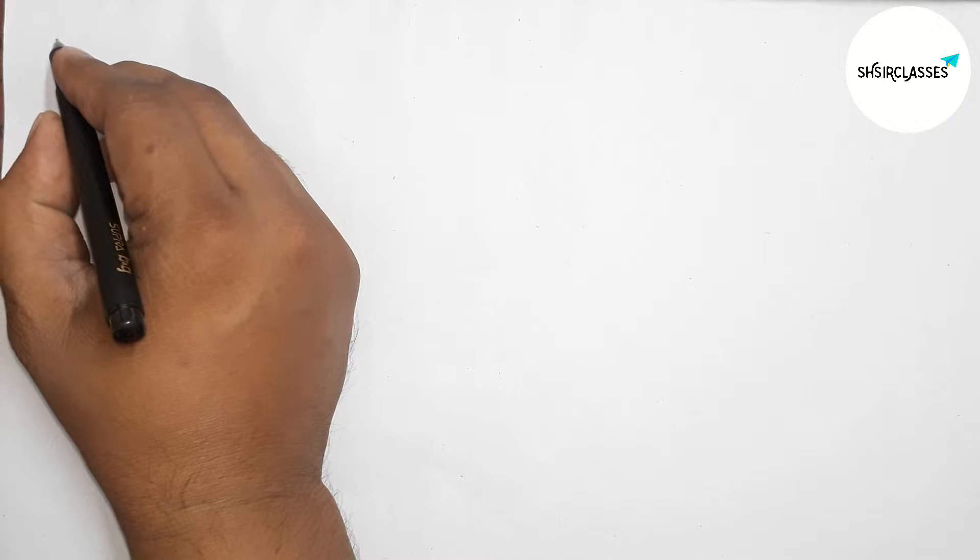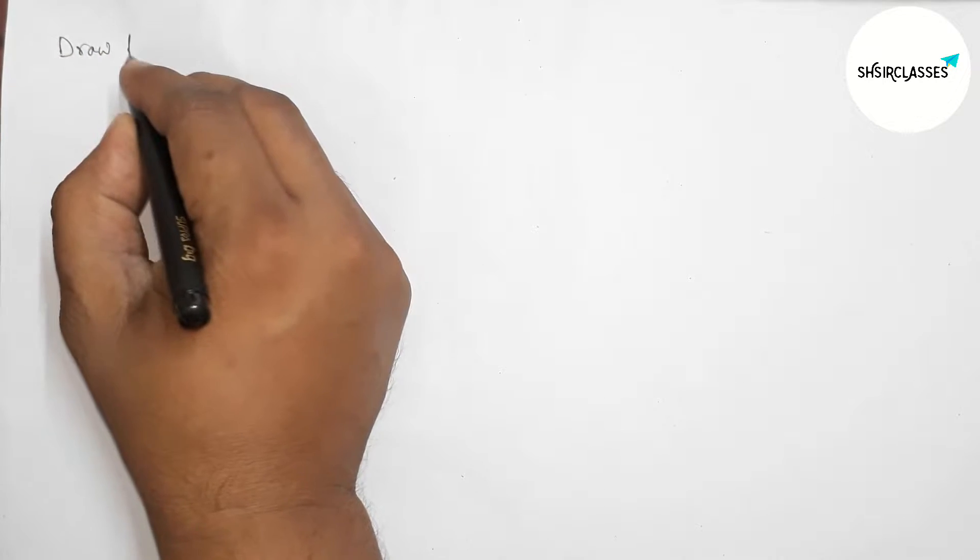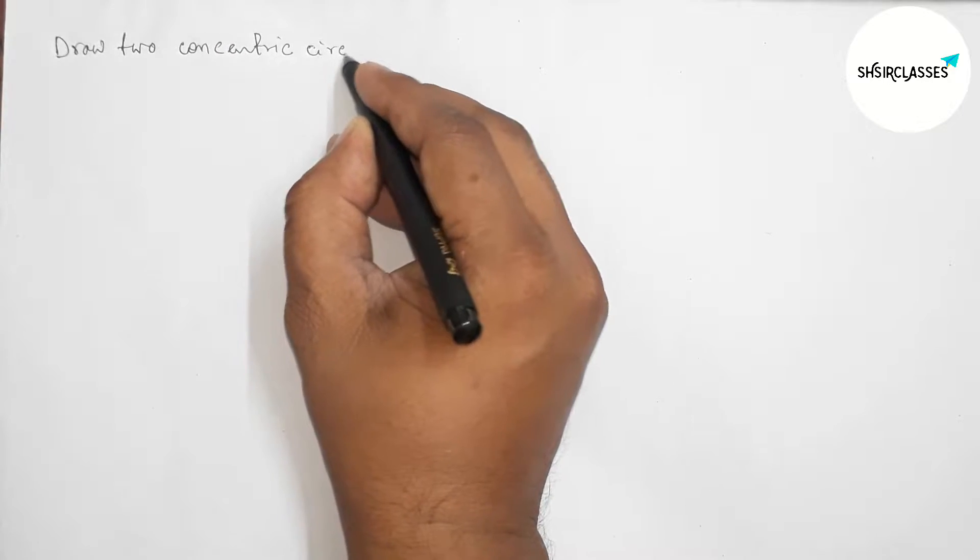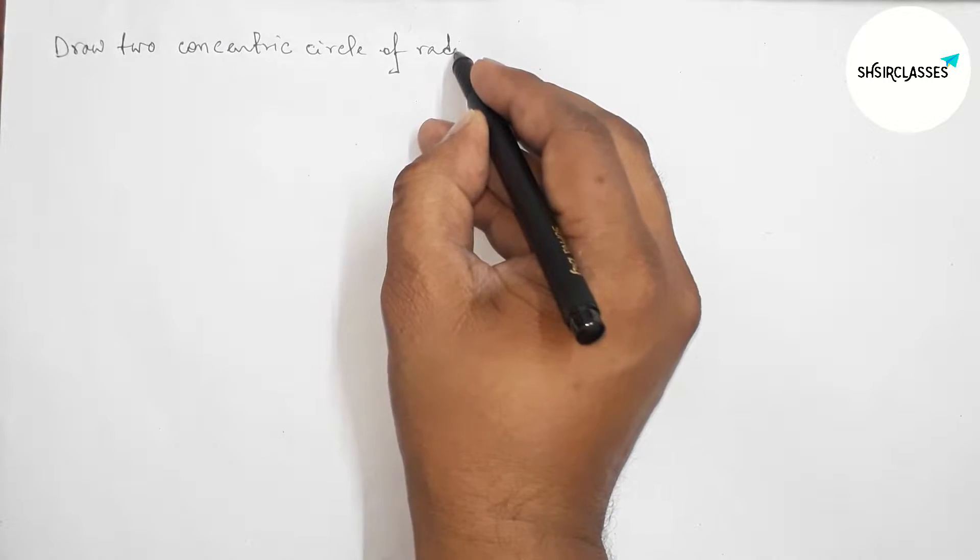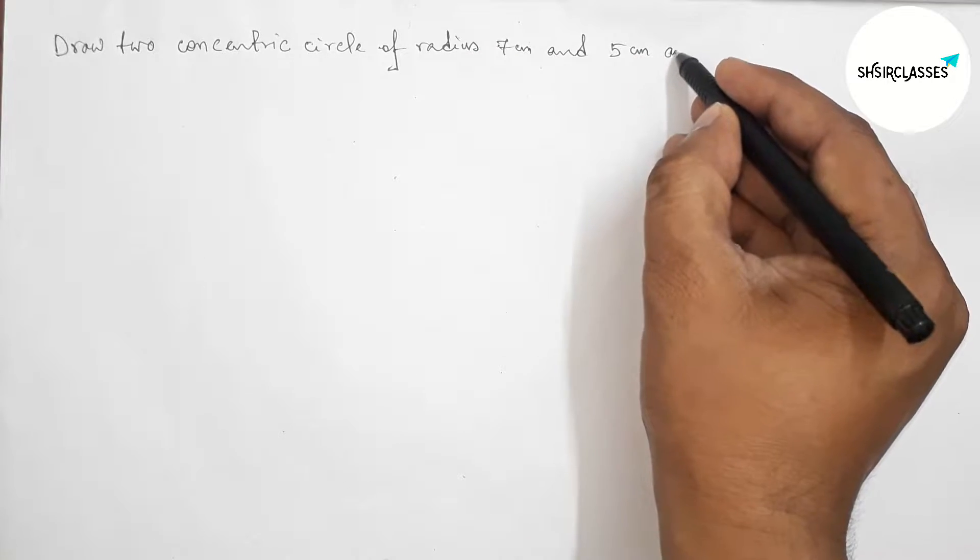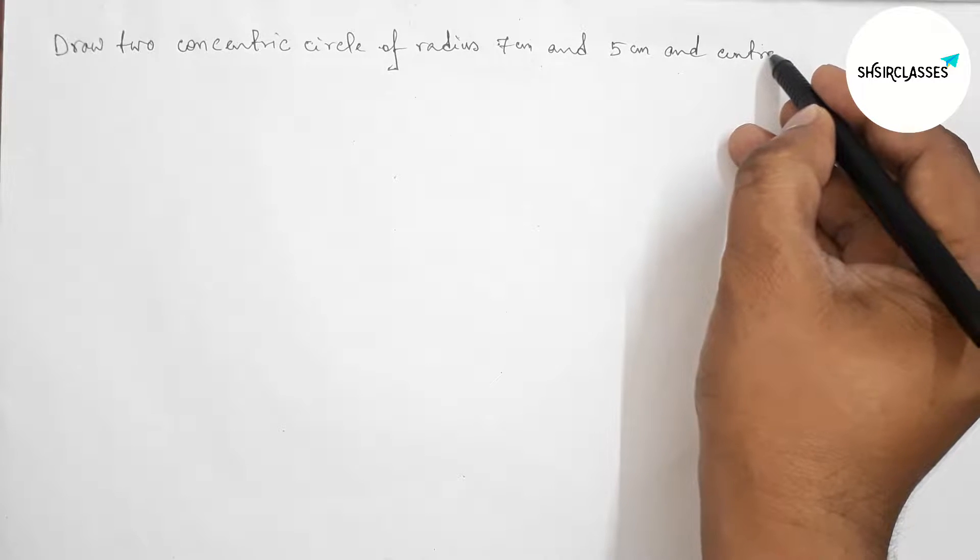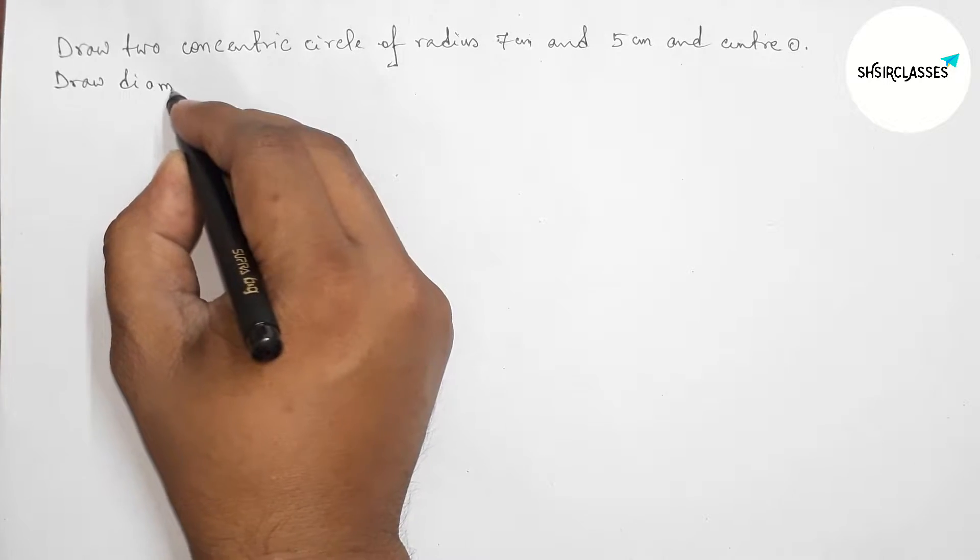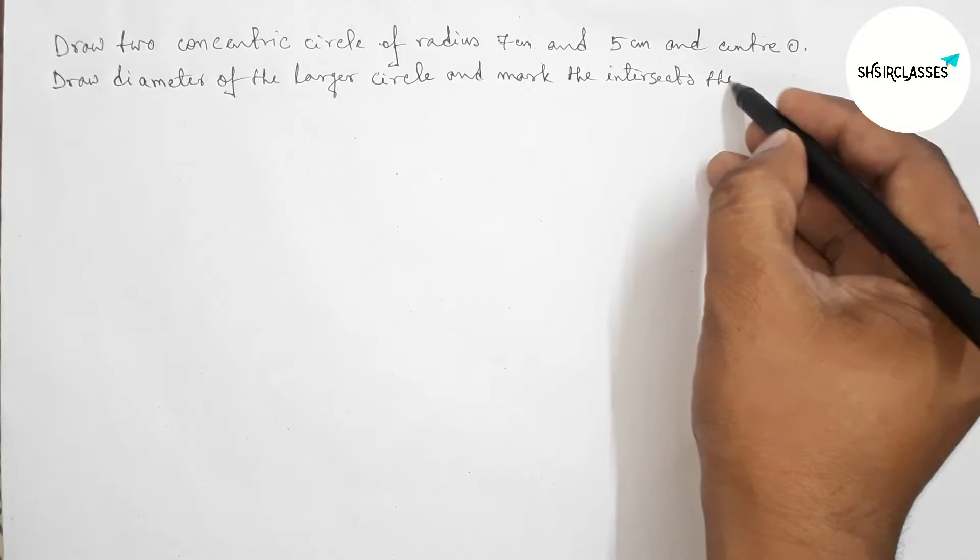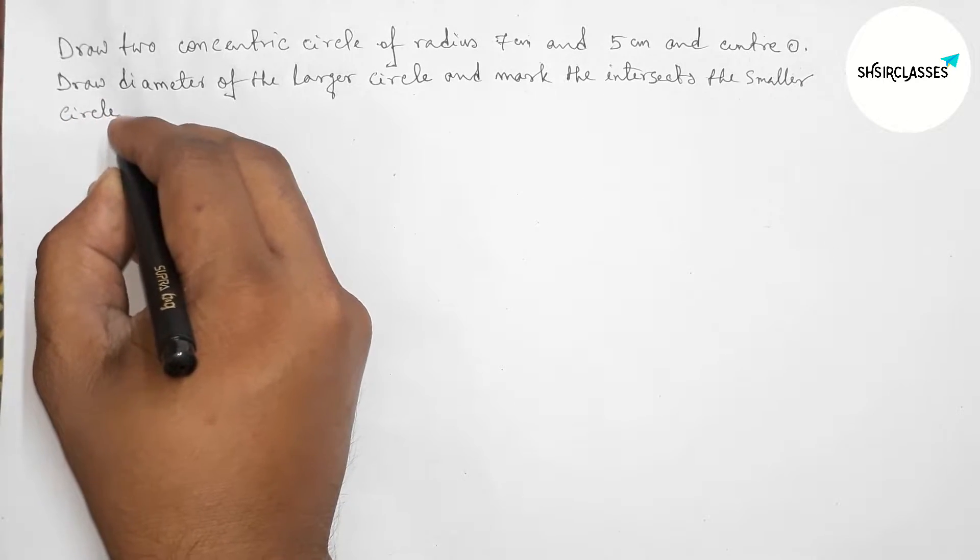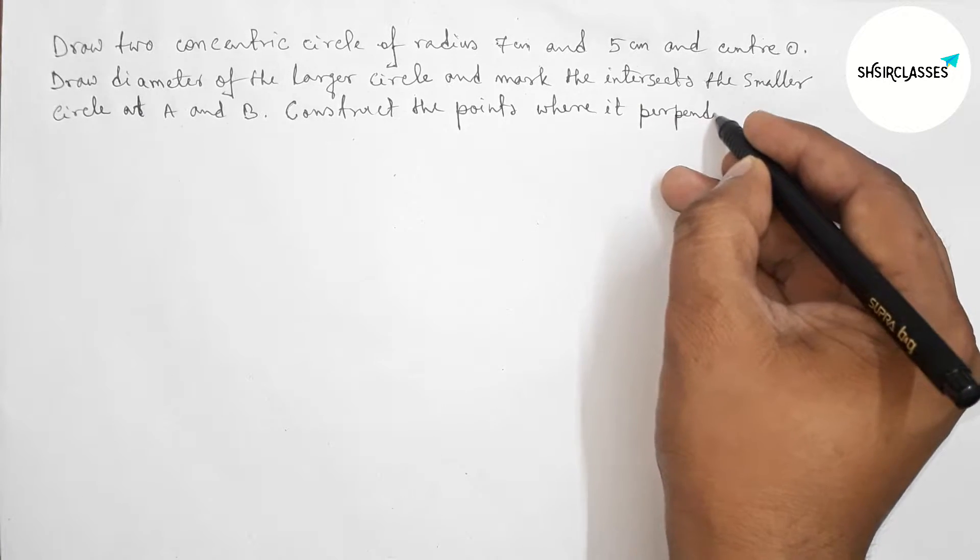Hi everyone, welcome to Essay Share Classes. Today in this video I am going to construct two concentric circles of radius 7 centimeters and 5 centimeters with center O, then draw a diameter of the larger circle which intersects the smaller circle.